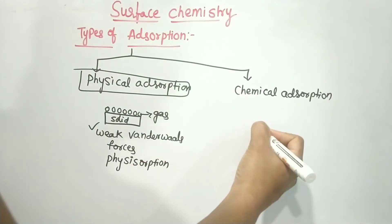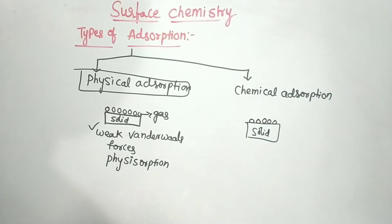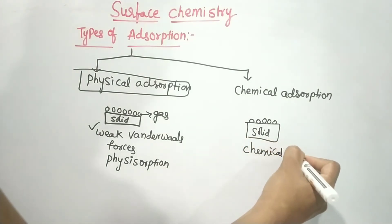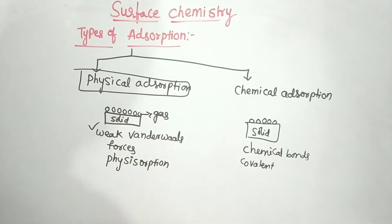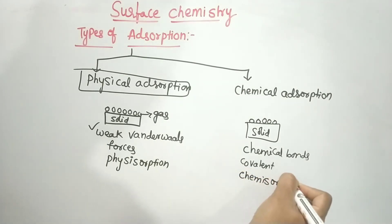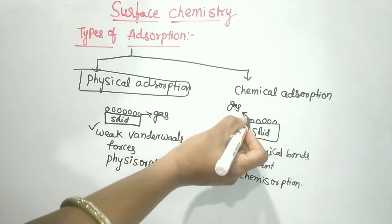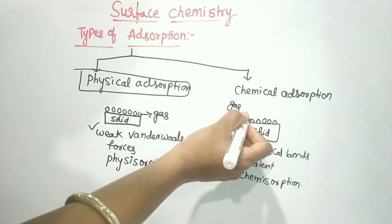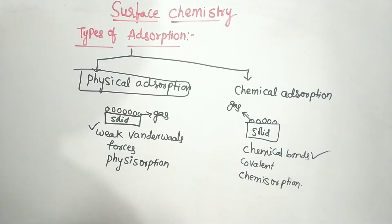Now for chemical adsorption: when gas molecules or atoms are held to the solid surface by chemical bonds — such as covalent bonds or coordinate bonds — the adsorption is termed as chemical adsorption or chemisorption. This is the definition of chemisorption.